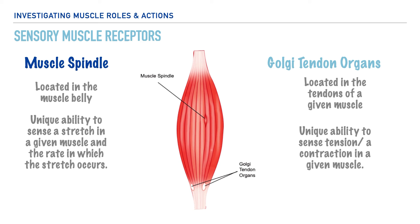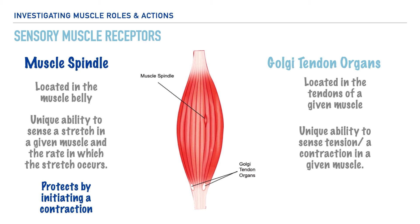Now that we have the particulars about these receptors, let's talk about why they're helpful. It's our muscle spindles that would cause a rapid contraction of a given muscle if it becomes overstretched, in an attempt to protect the muscle from injury. And conversely, with Golgi tendon organs, if it perceived too forceful of a muscle contraction, it would lead to a stretch of the given muscle, again in an attempt to protect it from injury.